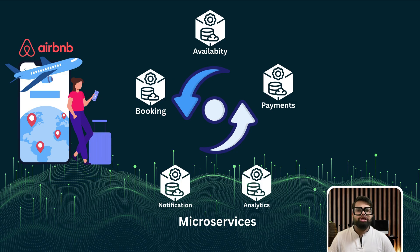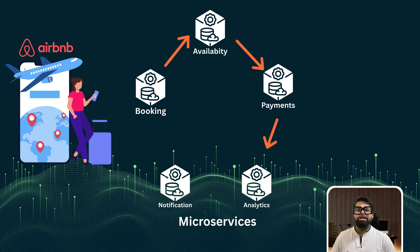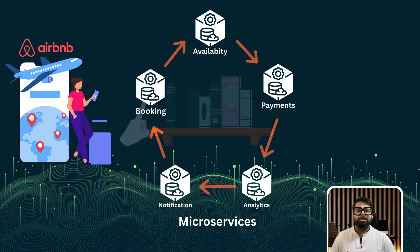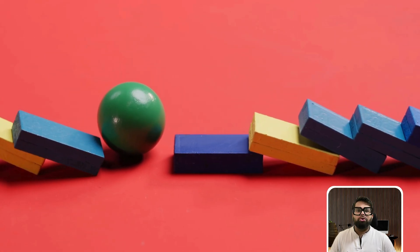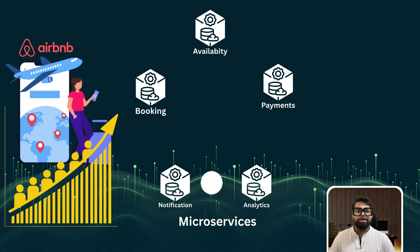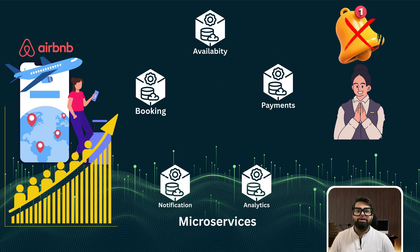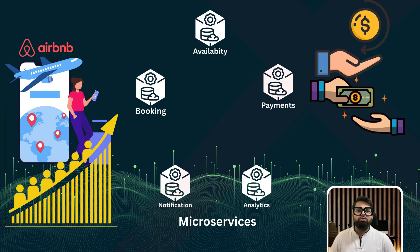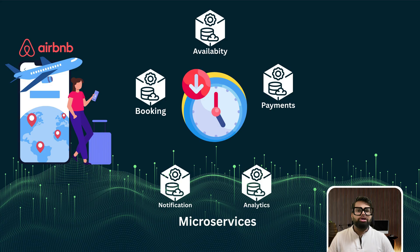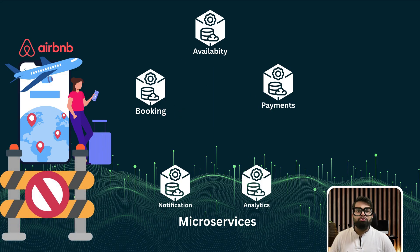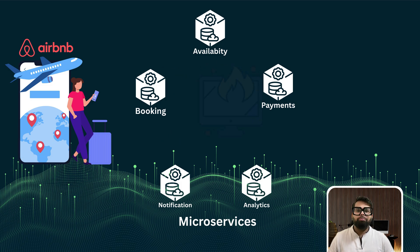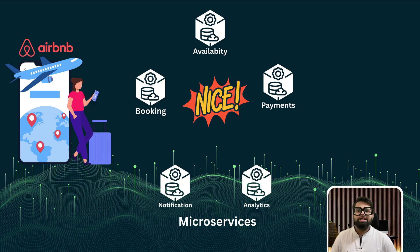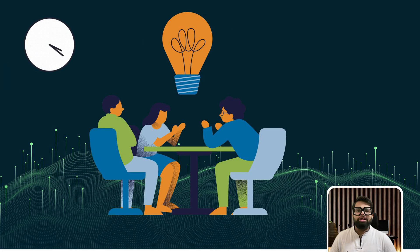We built everything around synchronous communication. Every microservice calls the next one: 'Hey, I did my part. Now it's your turn. Let me know when you are done.' It's like tipping the first in a line of falling books on a shelf — one movement leads to a dozen more. During peak traffic, guests are stuck on spinning wheels, hosts don't get notified, revenue data is missing, and refunds get delayed. One 10-minute downtime of the availability service leads to two hours of booking blockage, thousands of customers lost, and hours of analytics data gone.